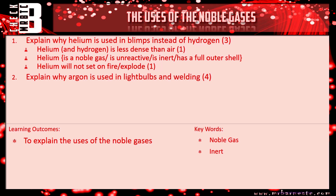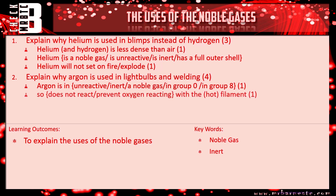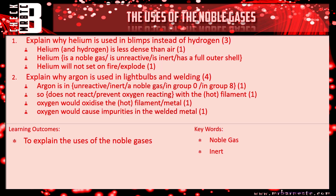Question two will take a very similar answer. Start off by saying argon is unreactive, inert, a noble gas in group zero or group eight — anything like that gets you the first mark. Second mark: it does not react with the filament, or prevents oxygen reacting with the hot filament. Third mark: oxygen would oxidize the hot filament metal. And finally: oxygen would cause impurities in the welded metal. Any of those four would have got you the marks.